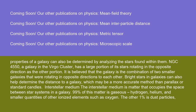The properties of a galaxy can also be determined by analyzing the stars found within them. NGC 4550, a galaxy in the Virgo cluster, has a large portion of its stars rotating in the opposite direction as the other portion. It is believed that the galaxy is the combination of two smaller galaxies that were rotating in opposite directions to each other. Bright stars and galaxies can also help determine the distance to a galaxy, which may be a more accurate method than parallax or standard candles.